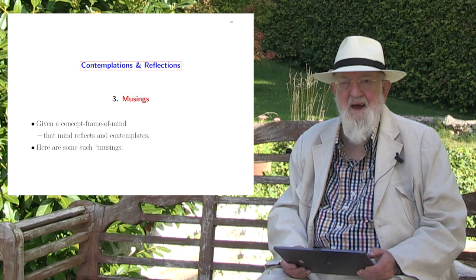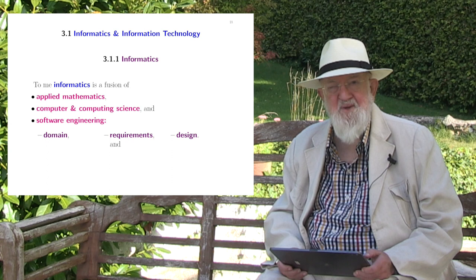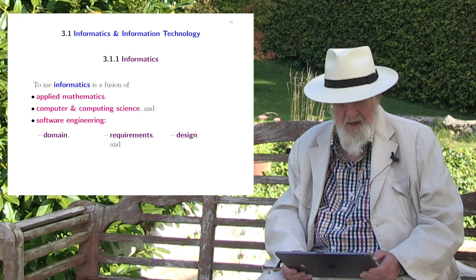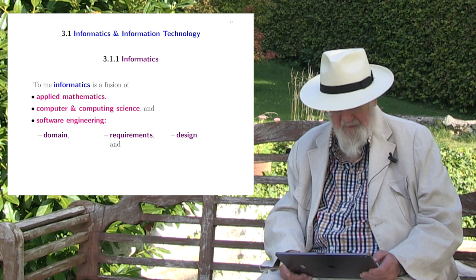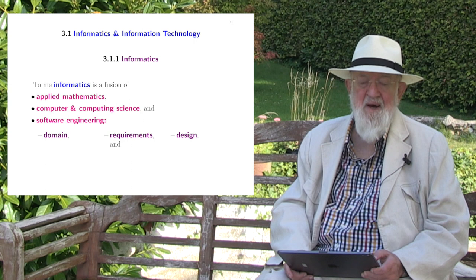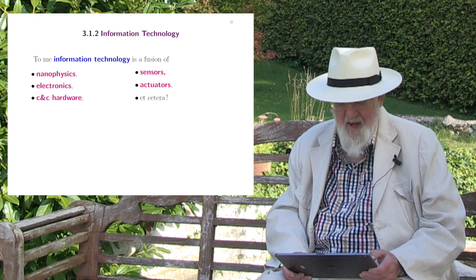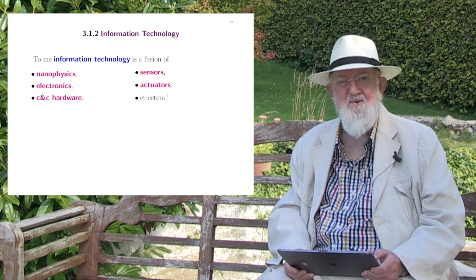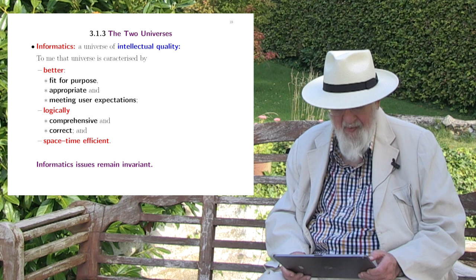In the second part of the talk, I will reflect on some issues. The first such issue is the distinction that I make between informatics and information technology. To me, informatics is a fusion of applied mathematics, computer and computing science, and software engineering, as it consists of domains, requirements, and software design. Information technology, in contrast, is a fusion of nanophysics, electronics, computer and communication hardware, sensors, actuators, etc. So we are talking about two universes.